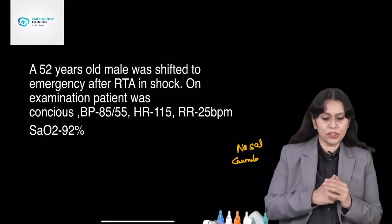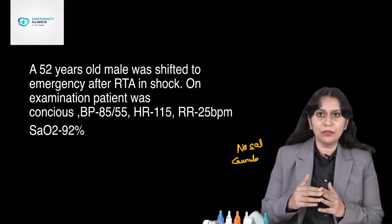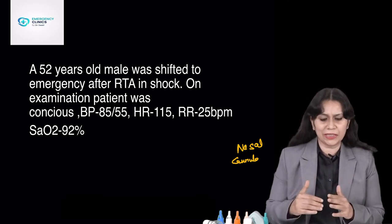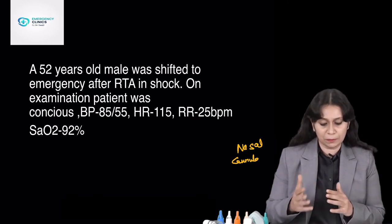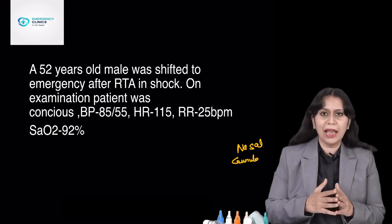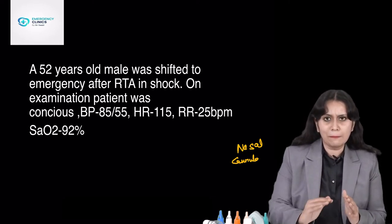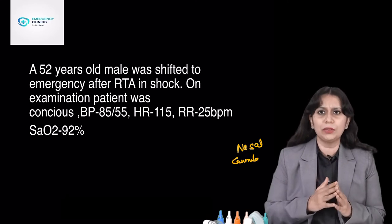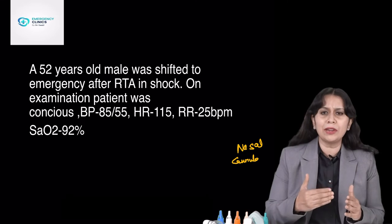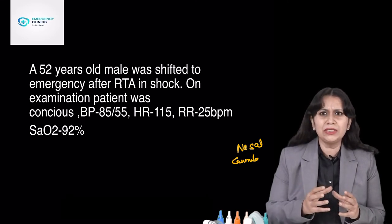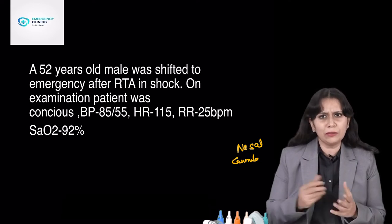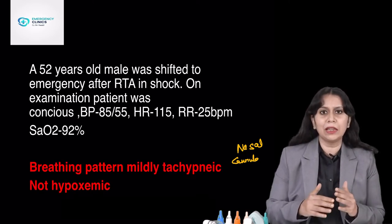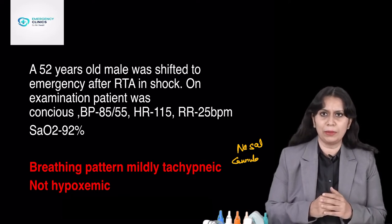Next case: a 52-year-old male shifted to emergency after road traffic accident, in shock. BP was 85/55 — patient was in hypotension. Heart rate 115 beats per minute, respiratory rate 25 breaths per minute, and saturation 92%. Patient was mildly tachypneic but there was no hypoxemia — saturation was adequate. But since the patient was in hypotension and shock, we supplement and try to increase oxygenation. So I would attach a nasal cannula in this patient.